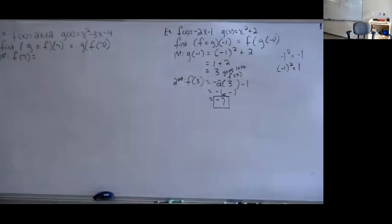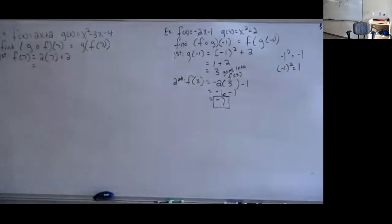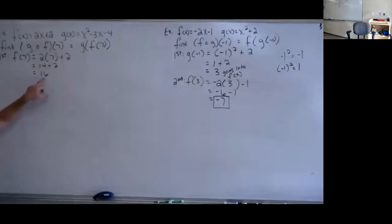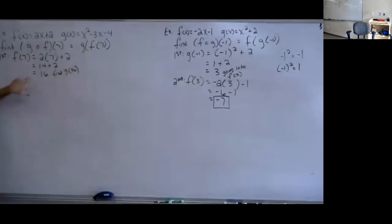Finding f of 7: that would be 2 times 7 plus 2, which is 14 plus 2 — that's 16. Since I got 16 here, the 16 now goes into my g. So we're going to find g of 16 now.